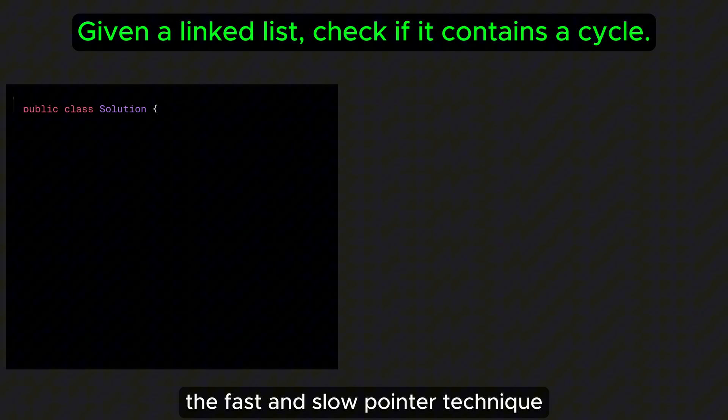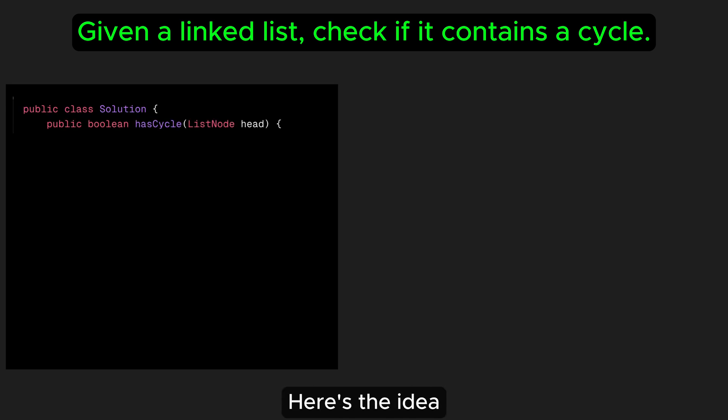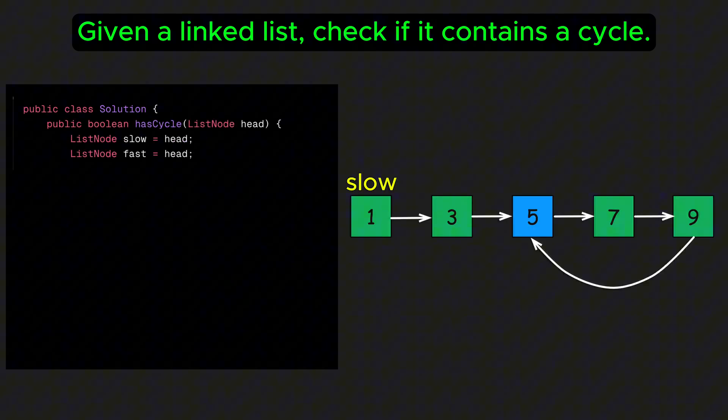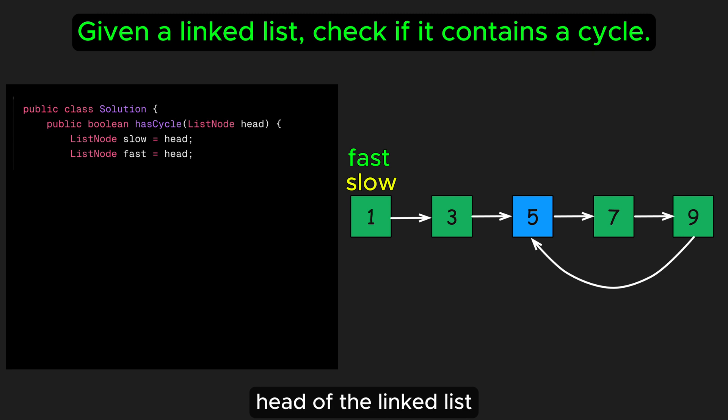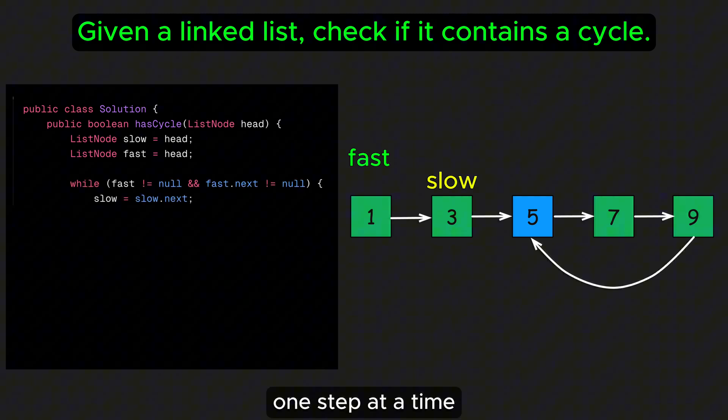And this is where the fast and slow pointer technique comes in. Here is the idea. Initialize two pointers, slow and fast, both starting at the head of the linked list. Move the slow pointer one step at a time and the fast pointer two steps at a time.